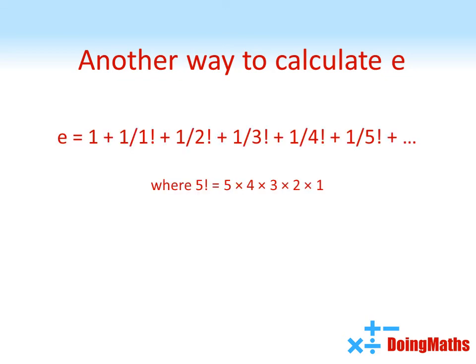Now there is another way we can calculate E. If we look at this formula here, E is actually equal to the sum of one plus one over one factorial plus one over two factorial plus one over three factorial and so on and so on. Where that exclamation mark — factorial — means you take the number and multiply it by all of the integers below it. So for example, five factorial is equal to five times four times three times two times one. The more terms you put into this sequence, the closer and closer you get to that value of E that we've already looked at.